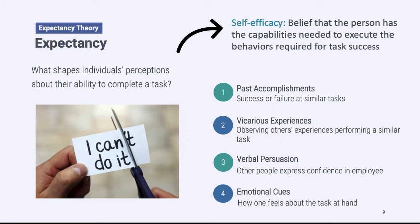Expectancy theory has three components. The first is called expectancy — if an employee believes they have the ability to do something, they're going to feel motivated to do it. What shapes expectancy beliefs is the variable called self-efficacy. If individuals have high self-efficacy, they'll also have high expectancy. There are four things that go into creating self-efficacy. Now I'm going to show you a quick video — watch it and imagine you're a student in the classroom, and consider whether you would have high or low self-efficacy after watching.